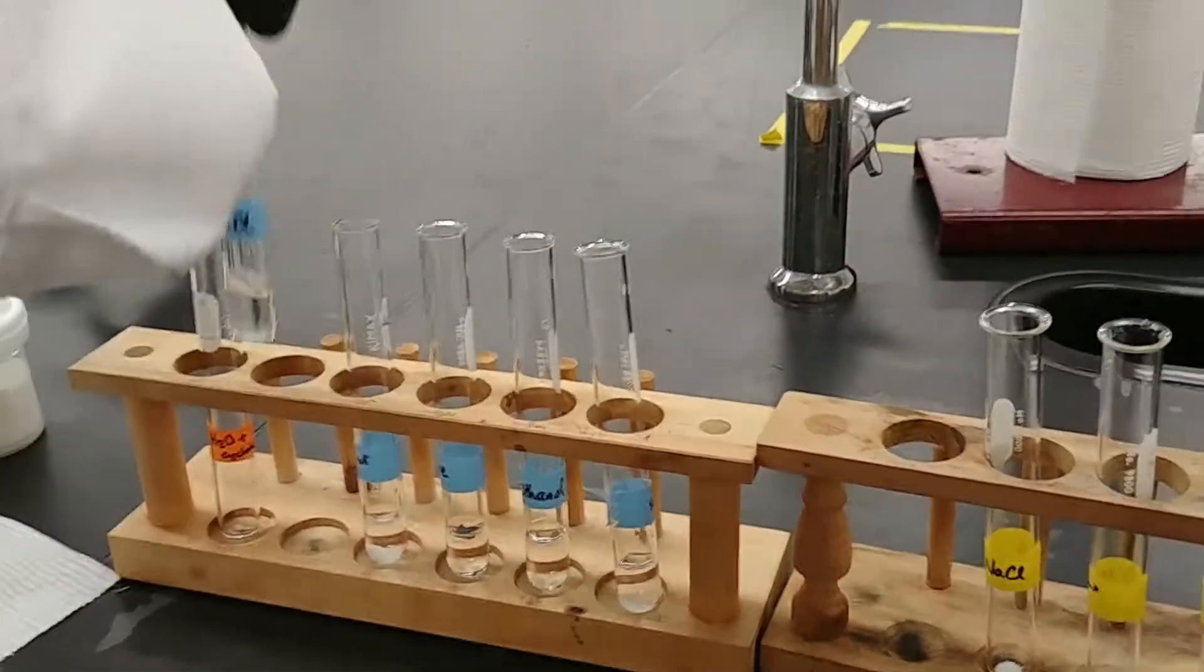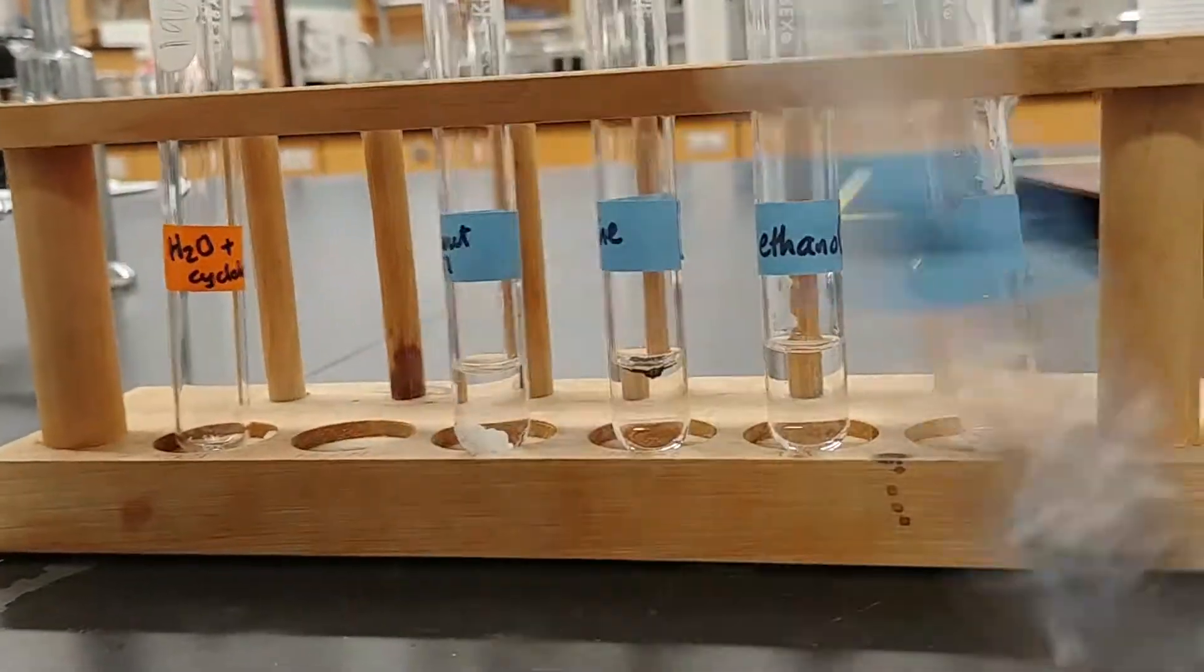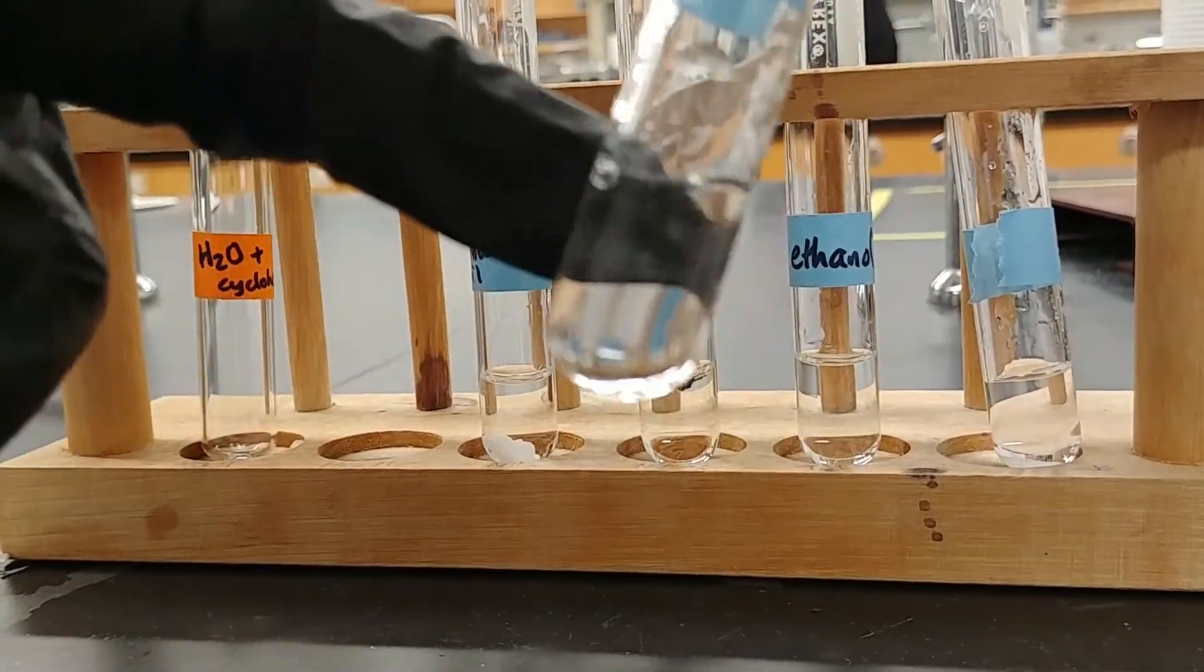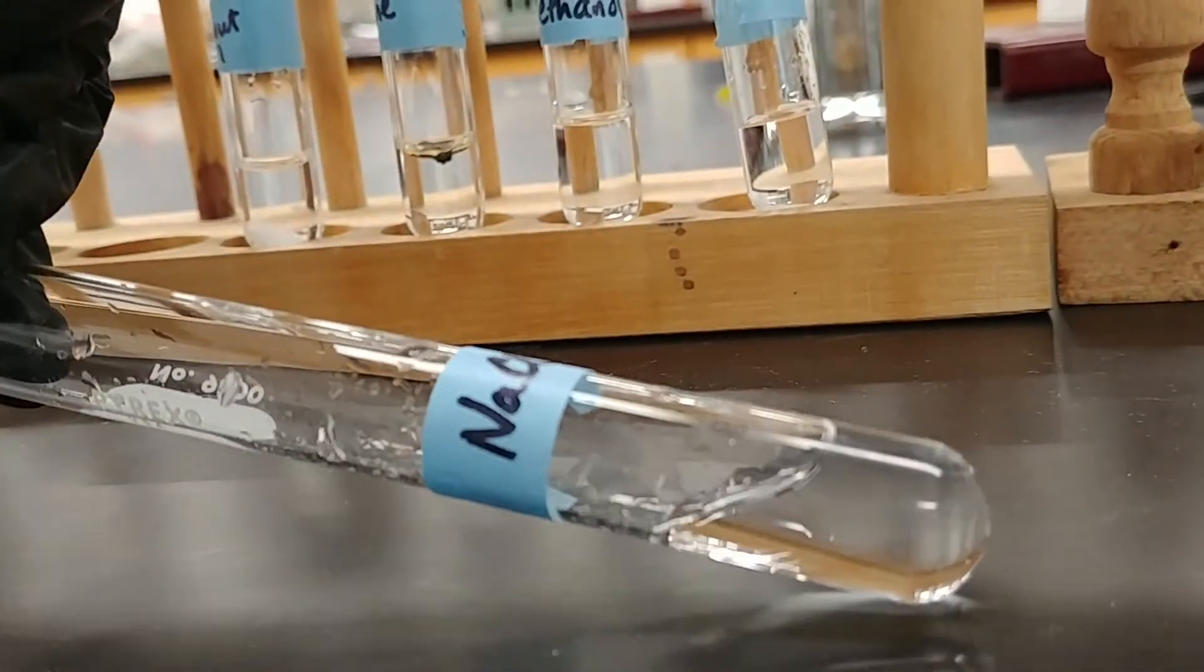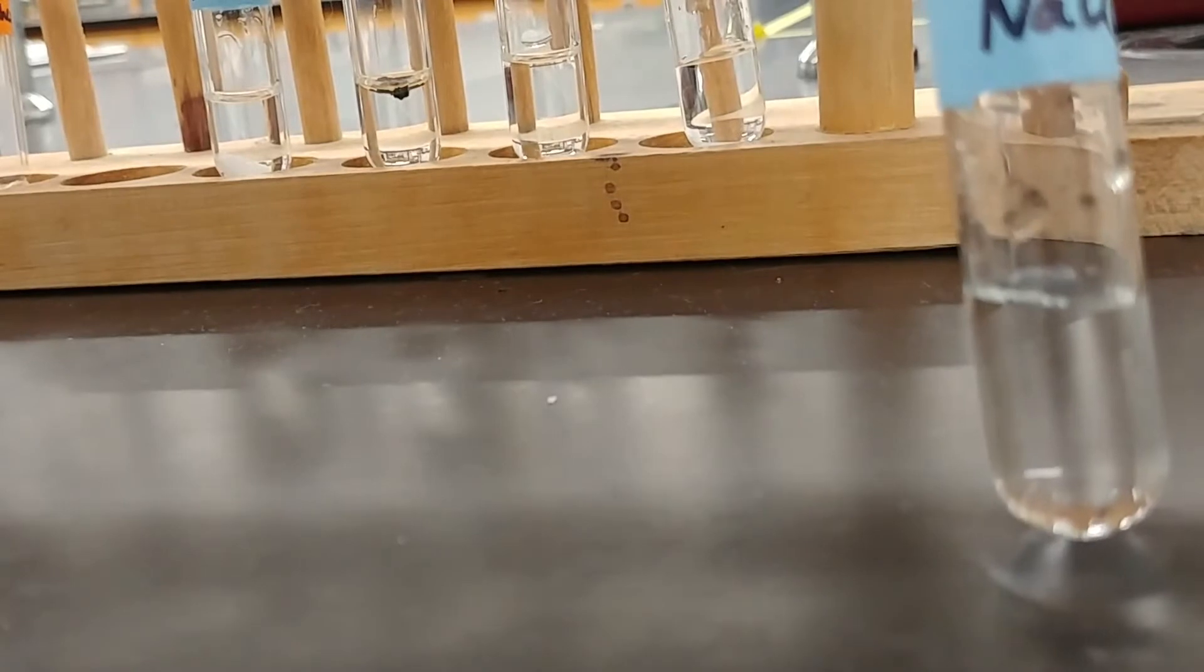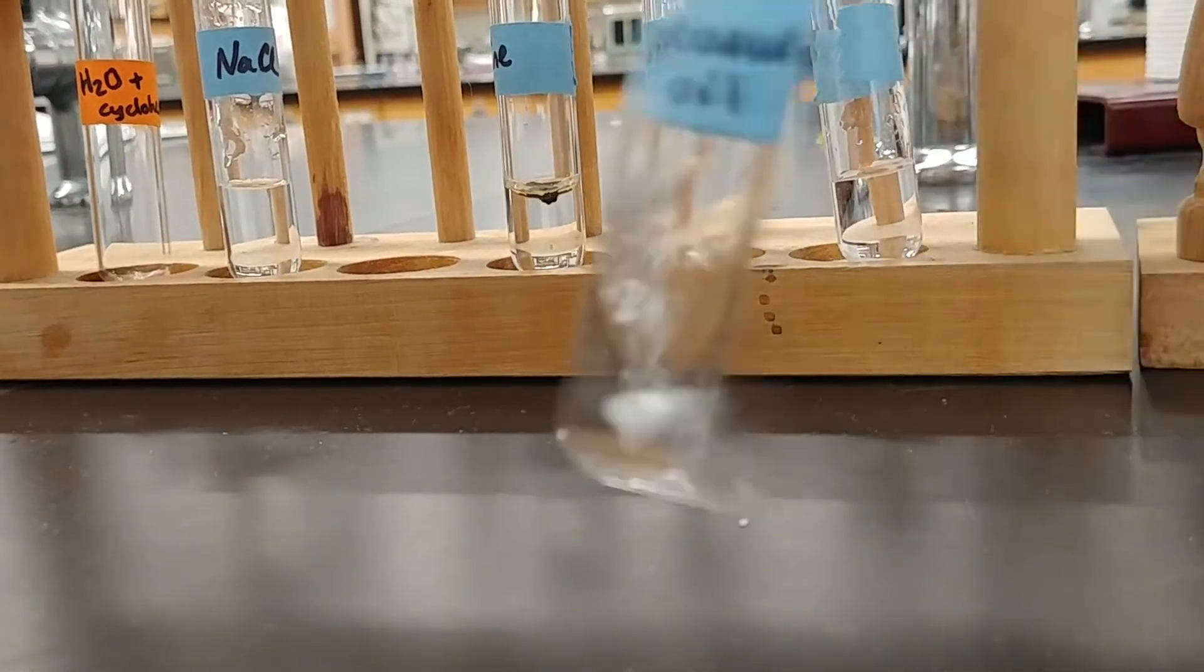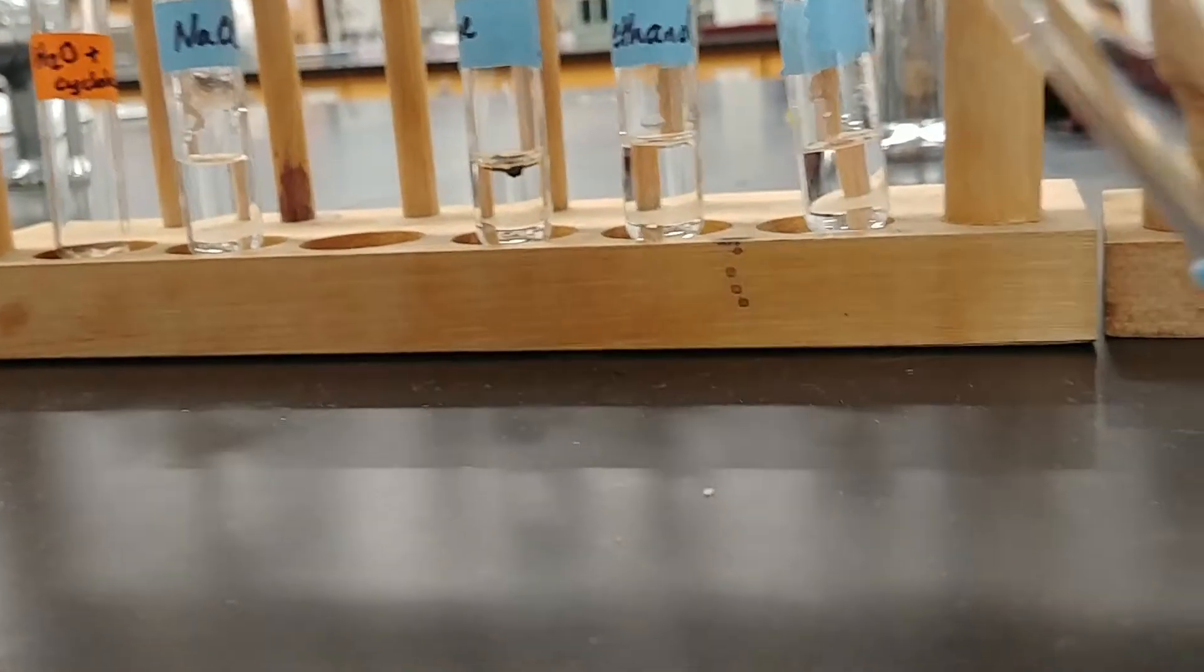So what I'm going to do is swirl these vigorously to get good mixing if they're able to mix, and then we're going to see what's left. This is our sodium chloride in water. Here we have coconut oil in water. Let's swirl that around pretty vigorously and see what we get.